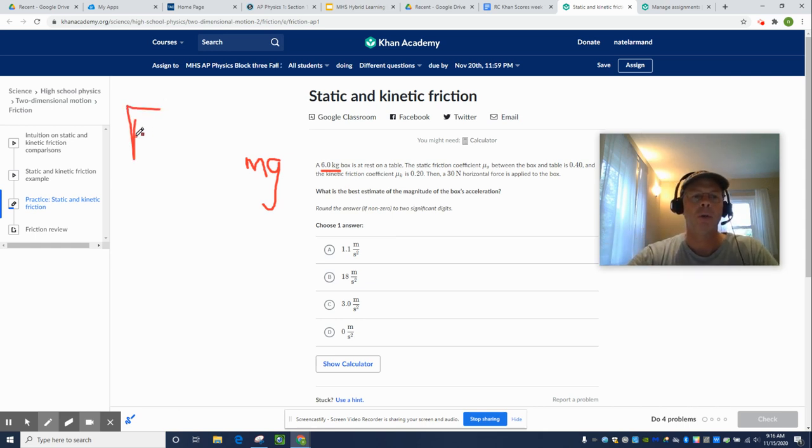And we call it the fun equation. So, friction equals mu multiplied by the normal force. And like I said, the normal force is the weight in this case because it's in vertical equilibrium.